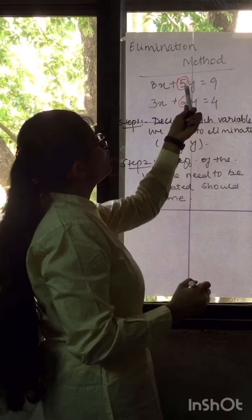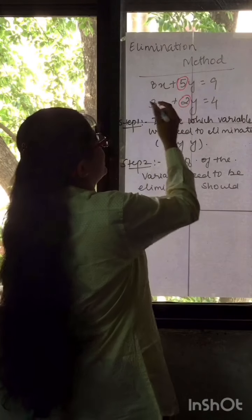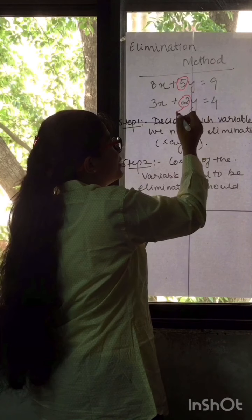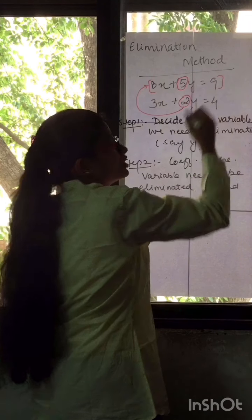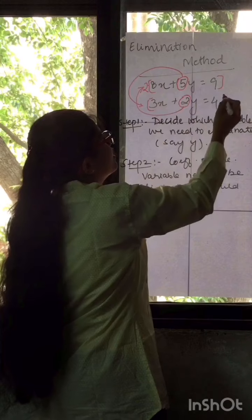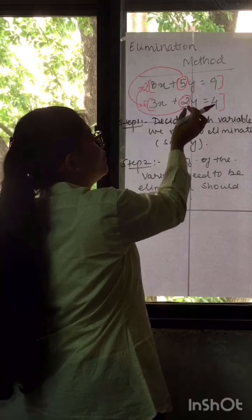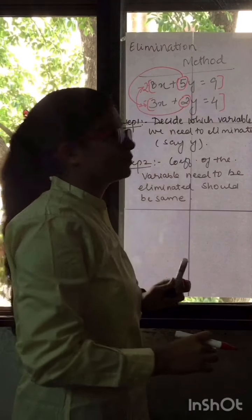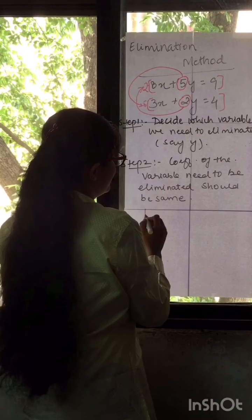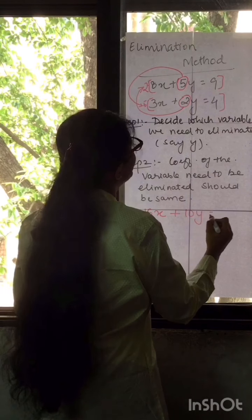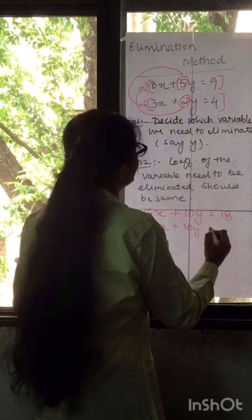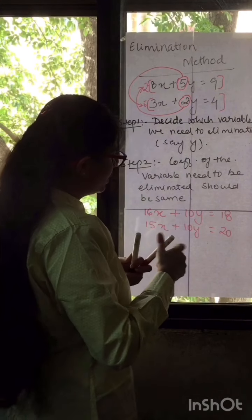Since the y-coefficients 5 and 2 are not equal, we need to make them the same. There is no common number between them, so we multiply the first equation by 2 and the second equation by 5. Multiplying the first equation by 2 gives 16x plus 10y equals 18. Multiplying the second equation by 5 gives 15x plus 10y equals 20. Now both equations have 10 as the coefficient of y.